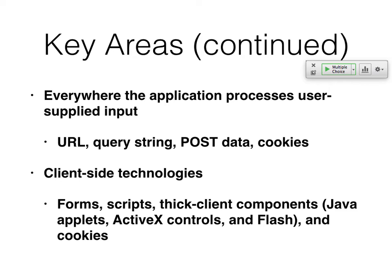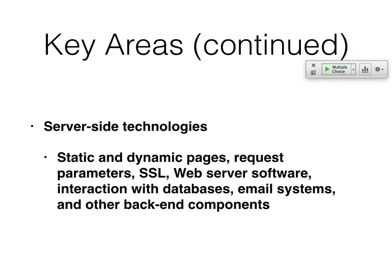The URL is obvious — you can type anything in the browser, and anything in the query string at the end of the URL is often there. Post data, cookies, and forms are also input points. Other components will have places where you can put in data. At any place you can put in data, you might be able to do some kind of attack or make it do something unexpected.